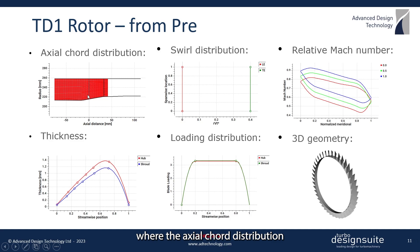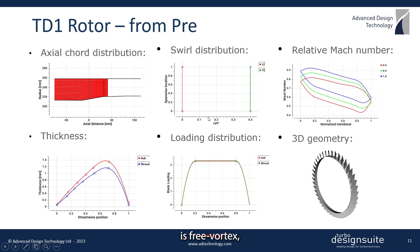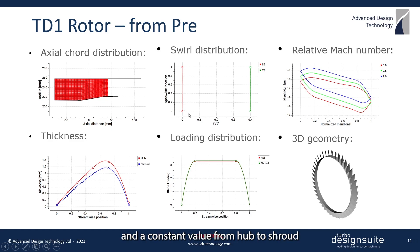where the axial cord distribution and all these other settings automatically come from the mean line cord TD-free, and the spanwise work distribution is free vortex, so it has zero swirl at the leading edge and a constant value from hub to shroud at the trailing edge.